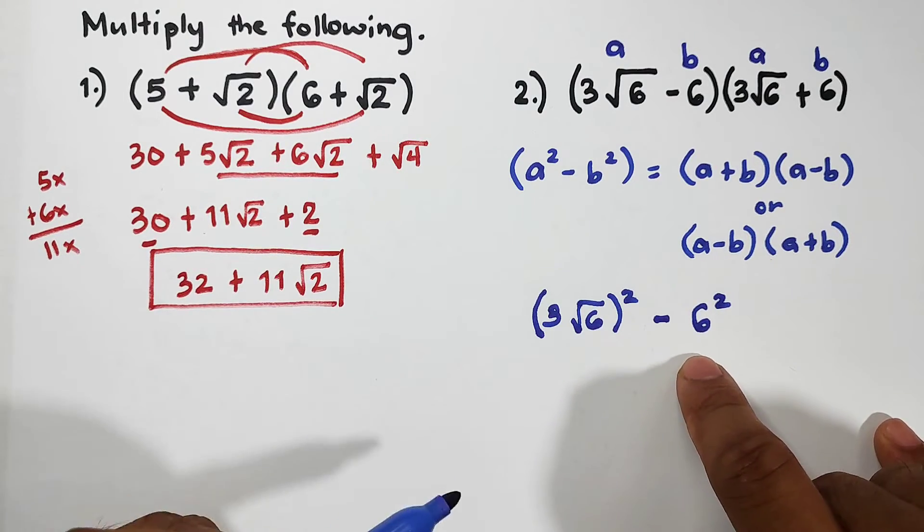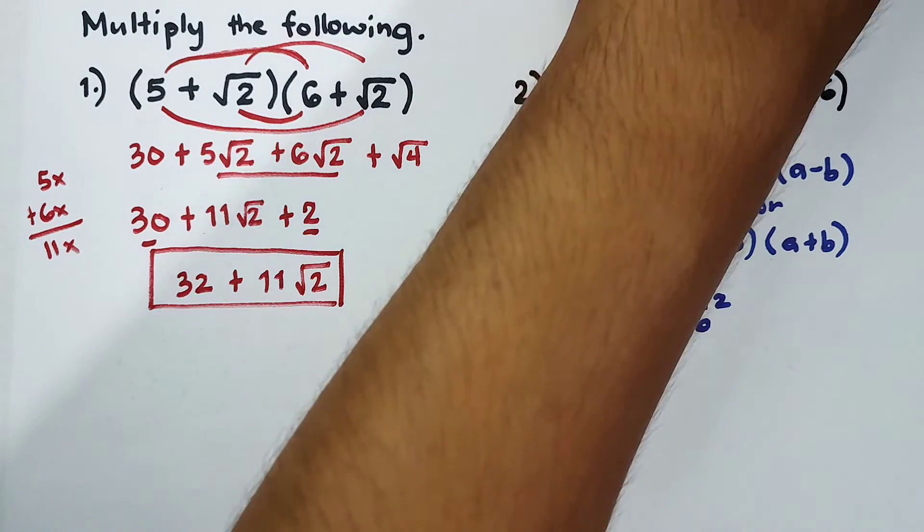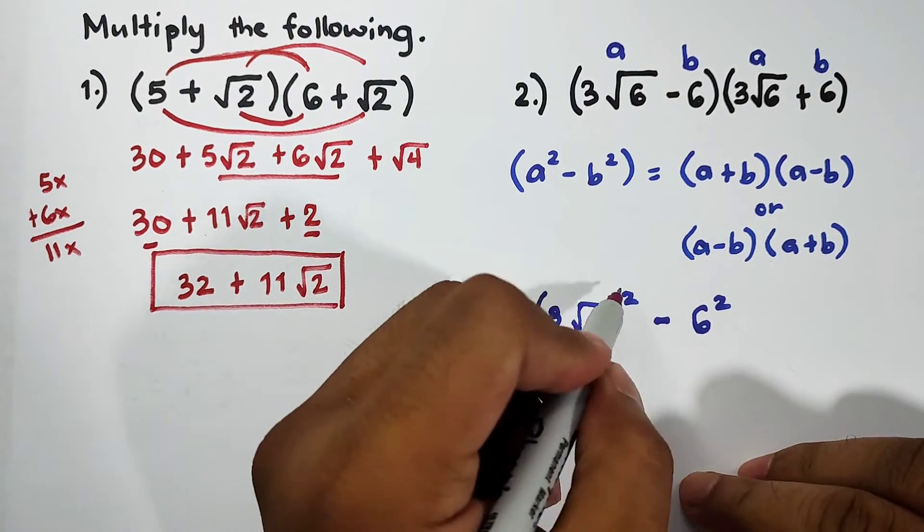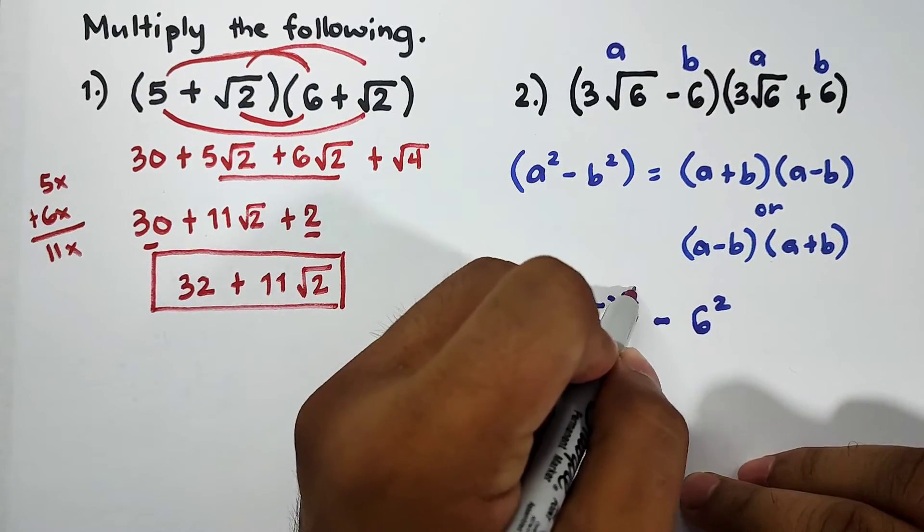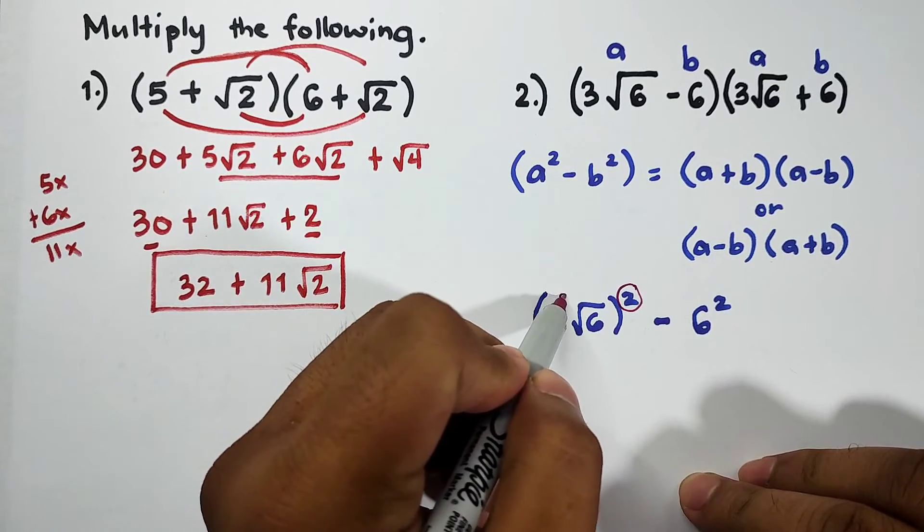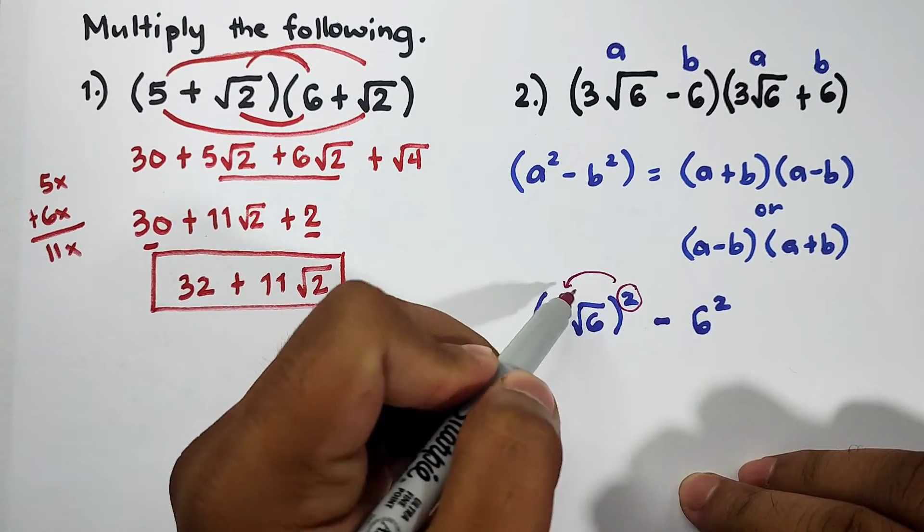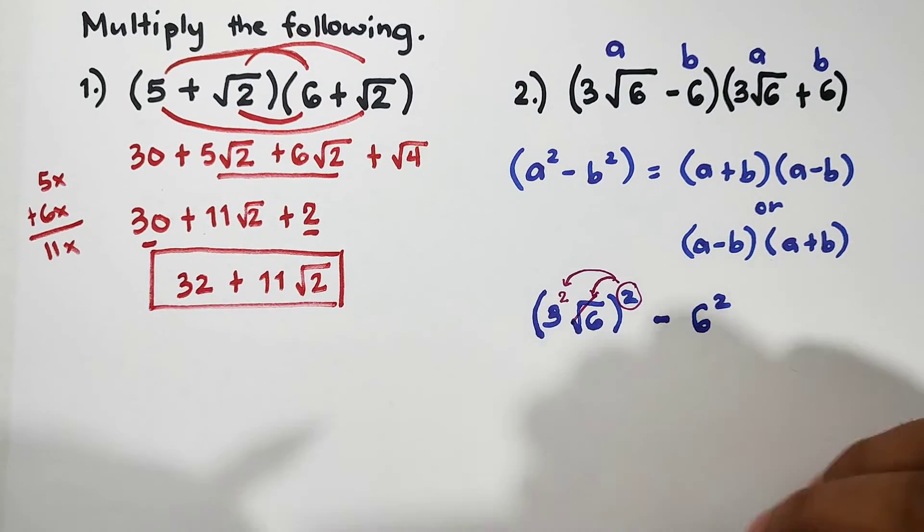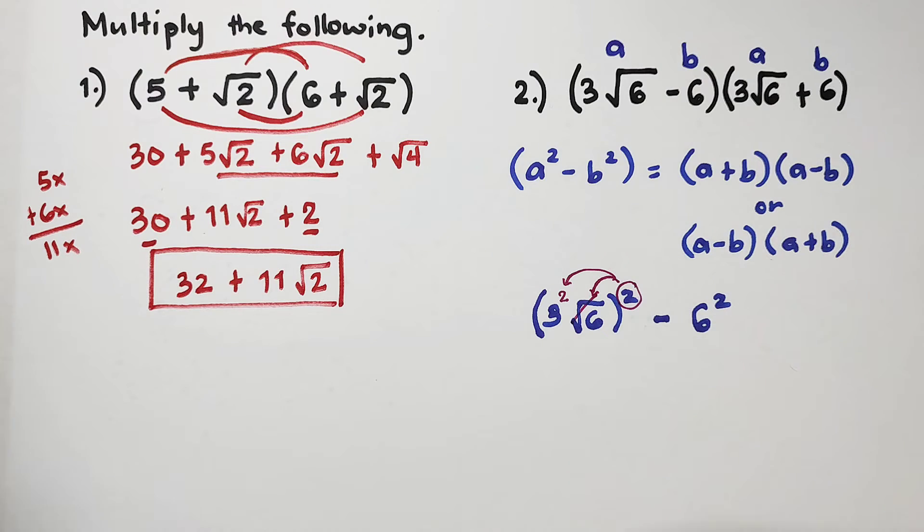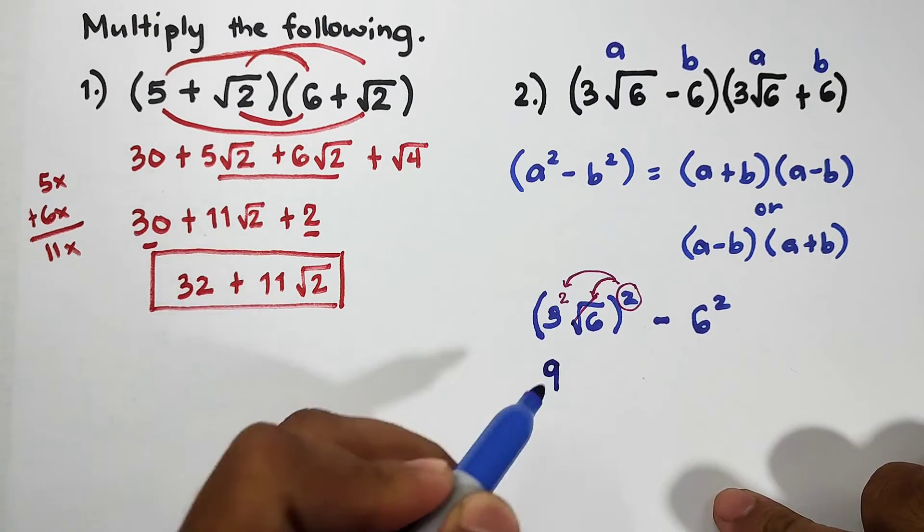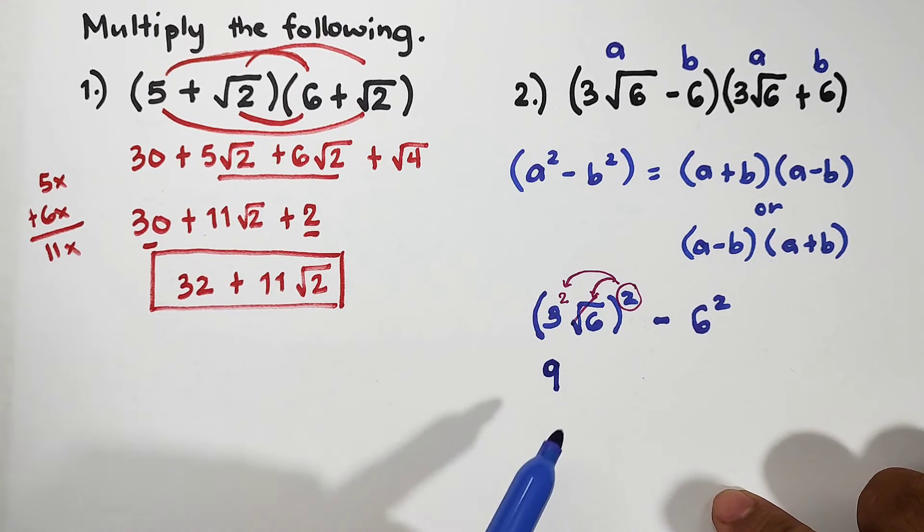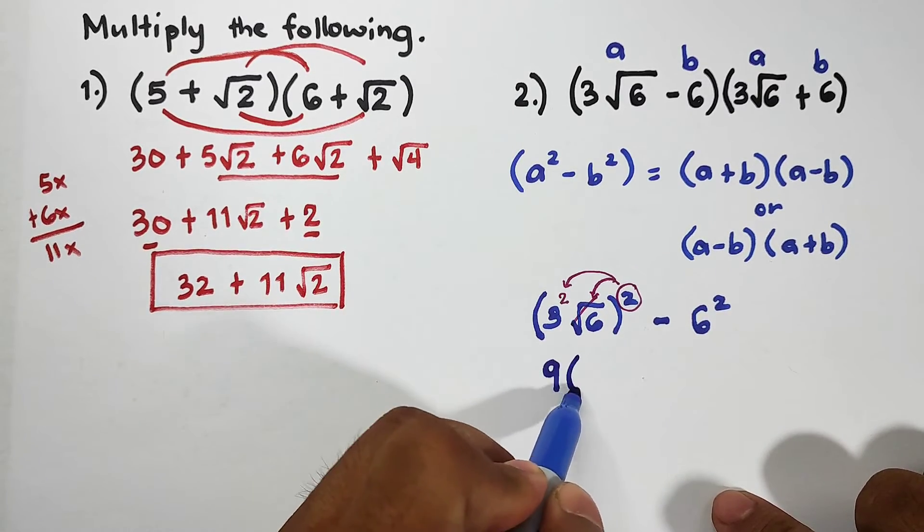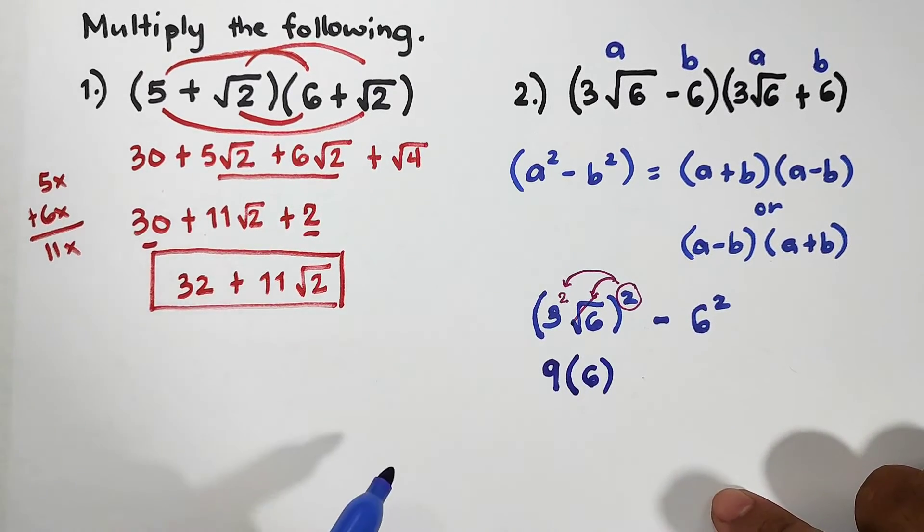How do we simplify this? We distribute the exponent. The exponent is distributed to the 3 and to the square root of 6. 3 squared is 9, and since we cancel the radical sign with the square on square root of 6, it becomes times 6.